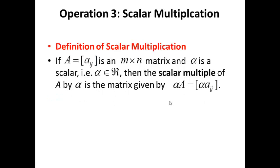Operation 3: scalar multiplication. Let A equals [Aij] be an M by N matrix, and alpha a real number, i.e., alpha is a scalar. Then the scalar multiple of A by alpha equals the matrix [alpha times Aij], i.e., every entry in A is multiplied by the scalar alpha. We shall see an example that illustrates all these concepts at the end.